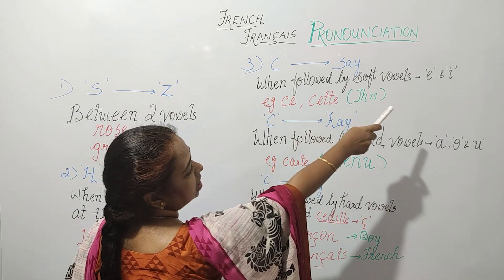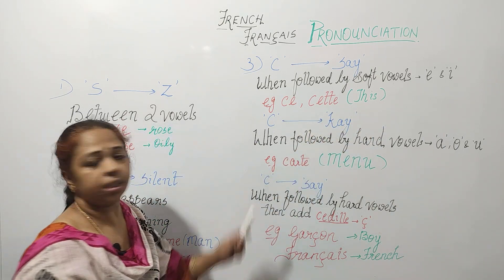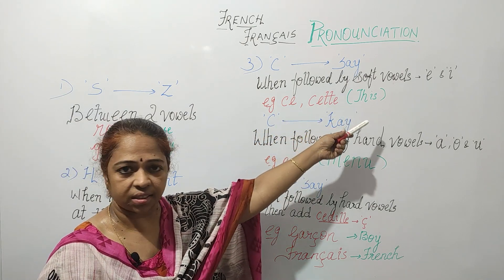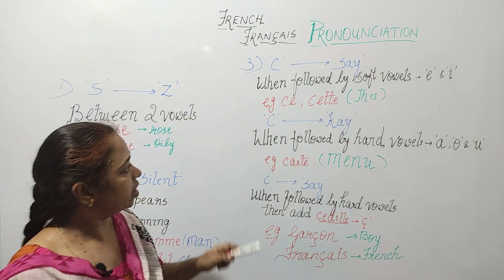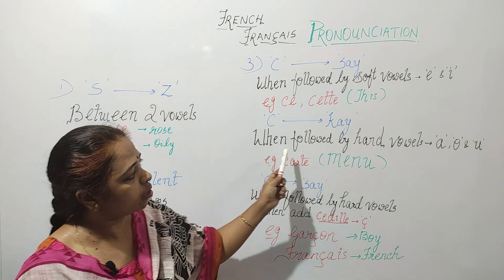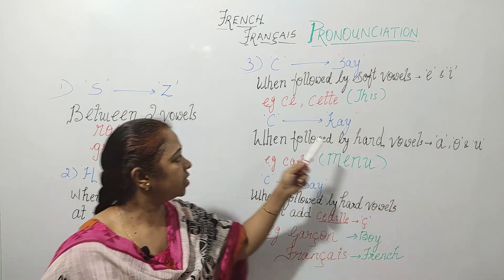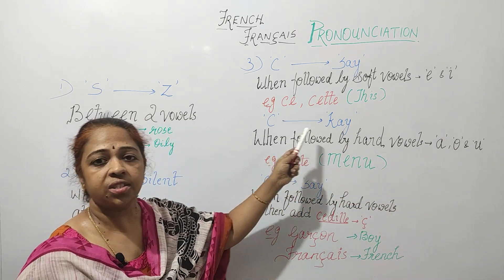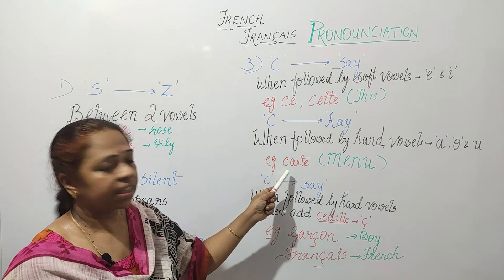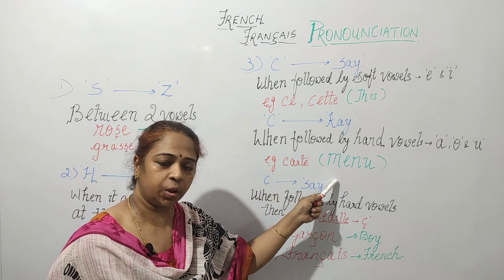C is pronounced as S when it is followed by soft vowels such as E and I. For example, 'ci' means 'this.' But when C is followed by hard vowels like A, O, and U, it is pronounced as K — for example, 'carte,' which means menu.